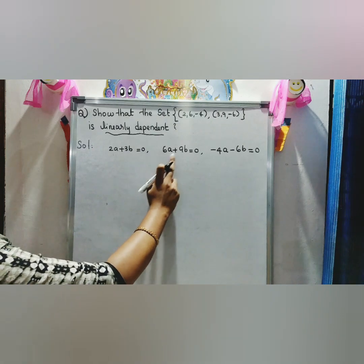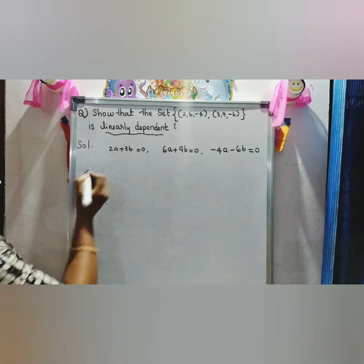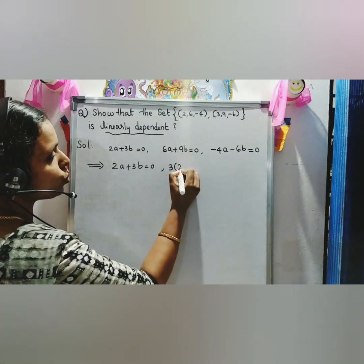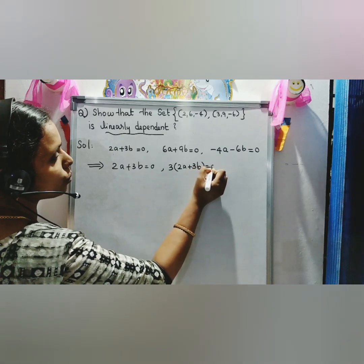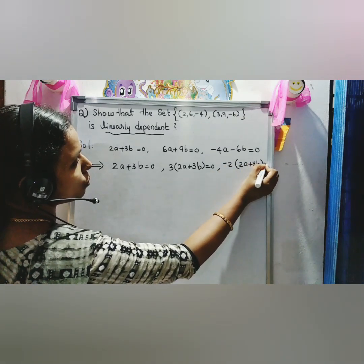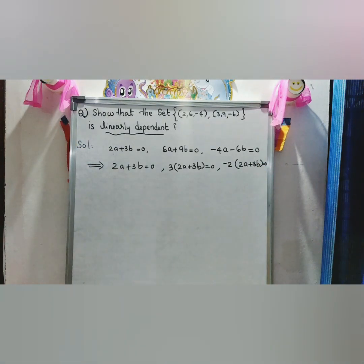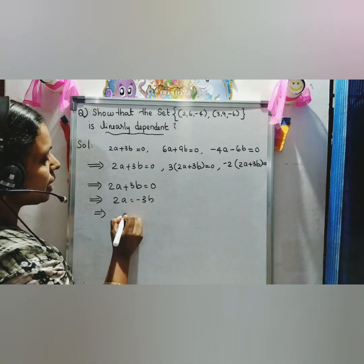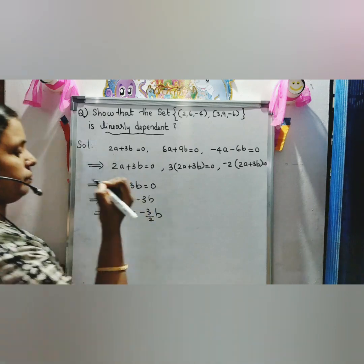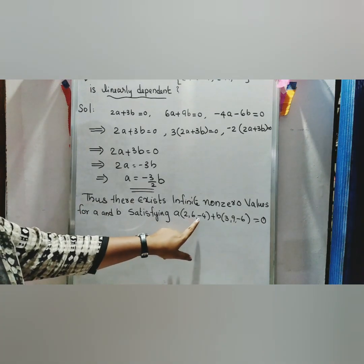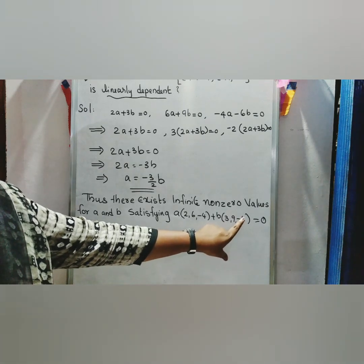From 2A + 3B = 0, we get 2A = -3B, which implies A = -3B/2. Thus there exist infinitely many non-zero values for A and B satisfying A·(2,6,-4) + B·(3,9,-6) = 0, so the set is linearly dependent.